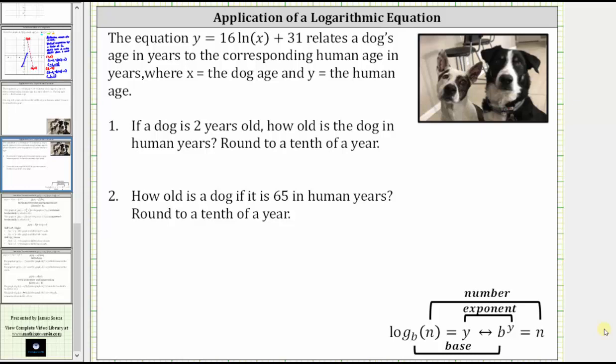The equation y equals 16 times natural log x plus 31 relates a dog's age in years to the corresponding human age in years, where x equals the dog age and y equals the human age.